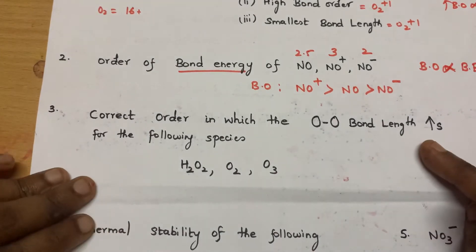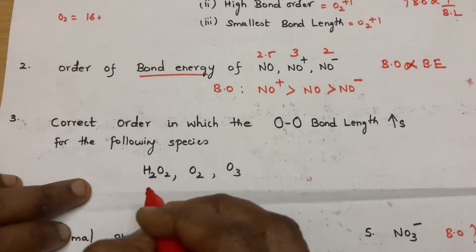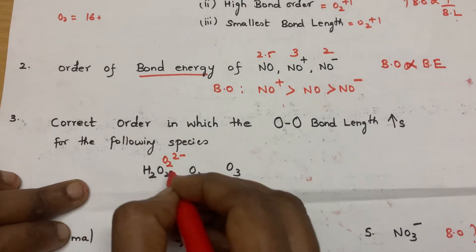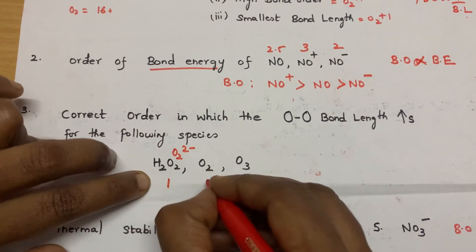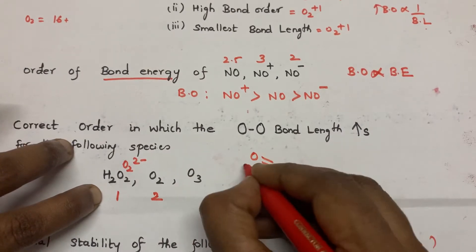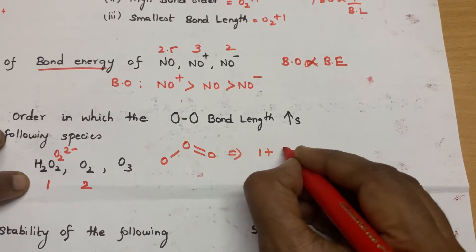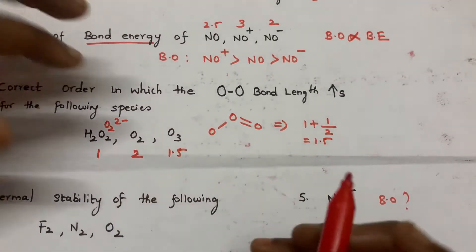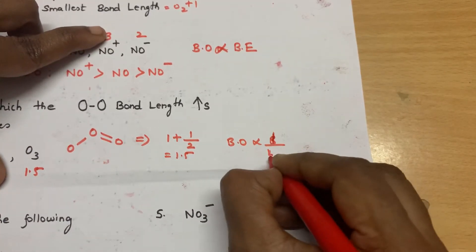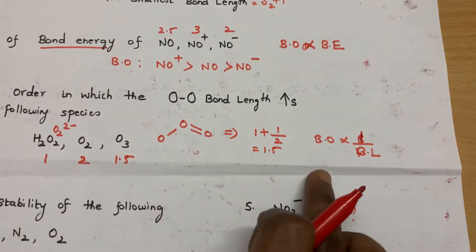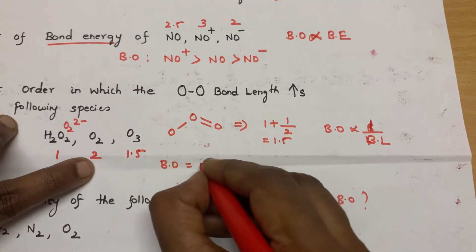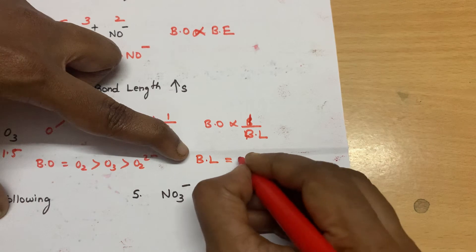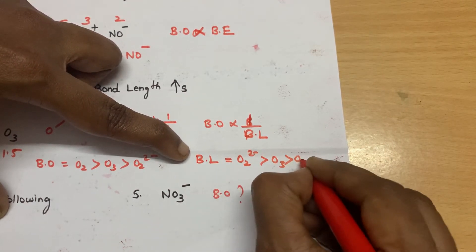The correct order in which the oxygen-oxygen bond length increases for the following species: H₂O₂ is essentially O₂²⁻ (removing H₂), so its bond order is 1. For O₂ it is 2. For ozone, applying the trick: 1 plus number of pi bonds (1) divided by number of sigma bonds (2) equals 1.5. So the bond orders are: O₂ (2) > O₃ (1.5) > O₂²⁻ (1). Since bond order is inversely proportional to bond length, the increasing bond length order is exactly the reverse.